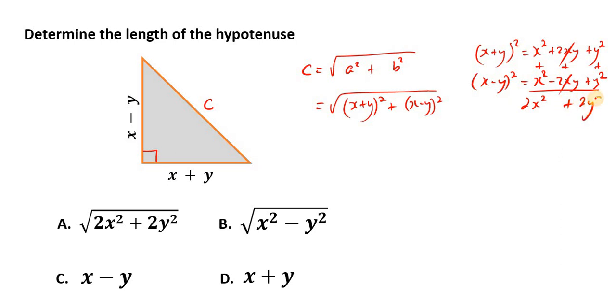is 2Y squared. So we end up having the square root of this result being 2X squared plus 2Y squared.